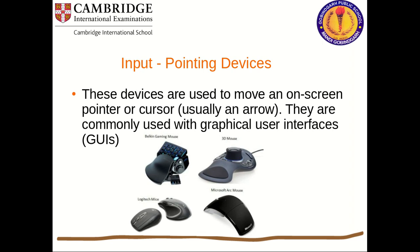Now let us discuss some input pointing devices. These devices are used to move an on-screen pointer or cursor, usually an arrow. They are commonly used with graphical user interface (GUI). GUI means where we can just click instead of writing a command. Previously we used a command line interface (CLI) where we needed to type commands. Nowadays we use GUI, and devices like mouse, touch screen, touchpad, light pen are used for pointing.